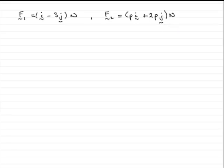What I'd do is to draw a diagram. Essentially the vector i goes this way — it's a unit vector — and the vector j goes upwards. Looking at F2, there's p in the i direction and 2p in the j direction. We're told that p is a positive constant, so we know that both these values are positive.